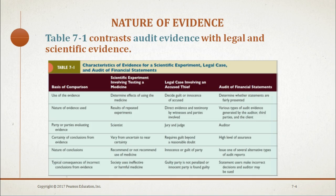There are six bases of comparison used in this illustration: the use of the evidence, the nature of the evidence used, the party or parties evaluating the evidence, the certainty of conclusions from the evidence, the nature of conclusions, and the consequences of incorrect conclusions from the evidence. Please read Table 7-1 on page 180 of your textbook and notice the similarities and differences among the three professions.